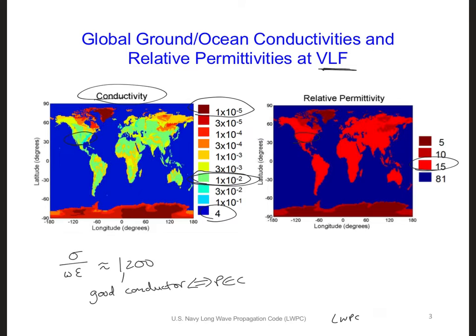For the ocean, the average conductivity value is 4 — sometimes 3.33 Siemens per meter is used, because the conductivity of the ocean can depend on the temperature and salinity of the water. The relative permittivity of the ocean is 81. This gives us a loss tangent — sigma over omega epsilon at 10 kilohertz — of about 74,000. Comparing this with the ground value of 1,200, we can see that the ocean is an even better conductor.